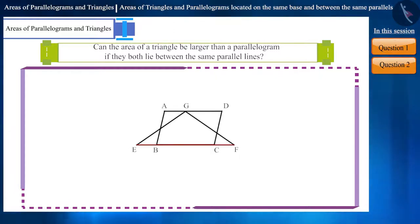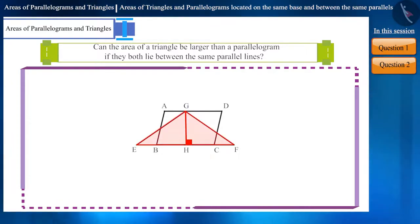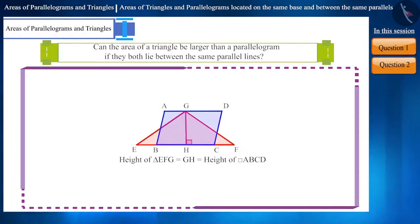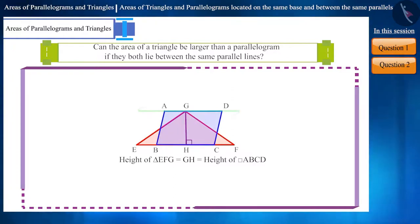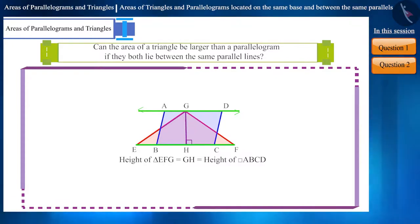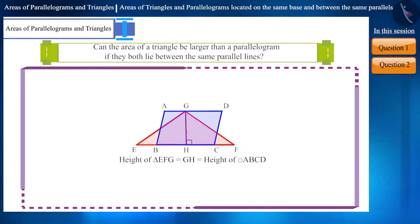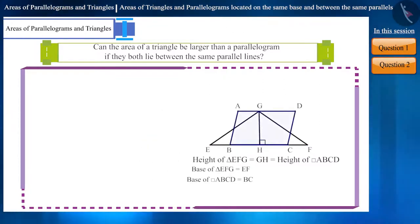First, let's draw a perpendicular from the point G on side EF and call it GH. This is the height of both the triangle and parallelogram. Since these shapes lie between the parallel lines AD and EF, the height of both will be equal, which is GH. Therefore, their area will depend on their base. The height of both quadrilateral ABCD and triangle EFG is GH.